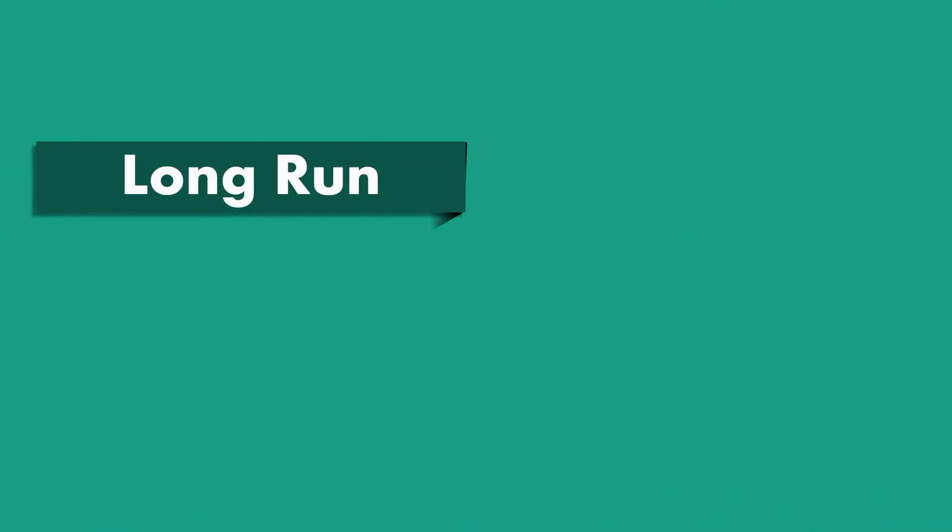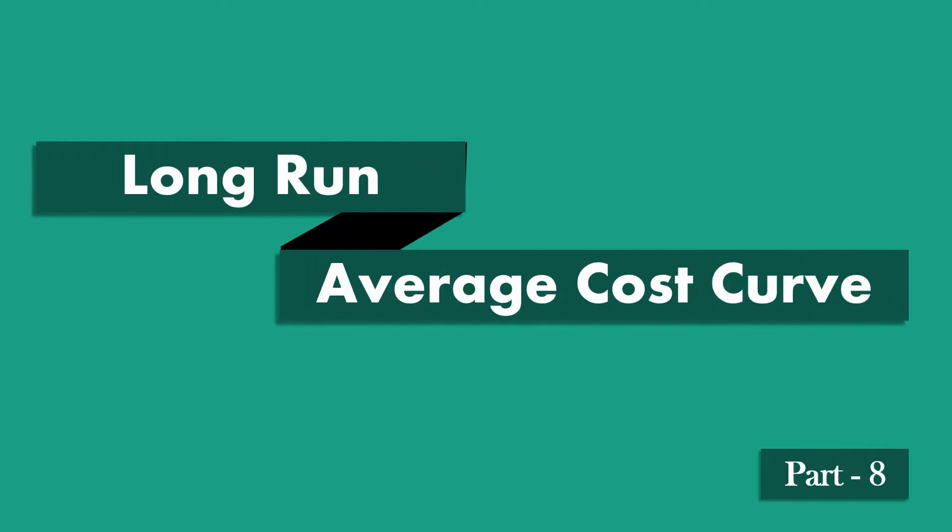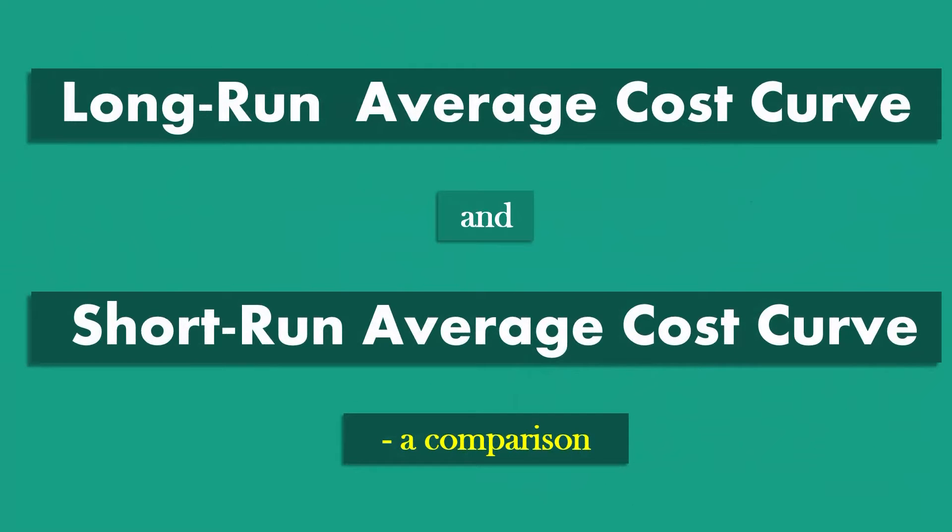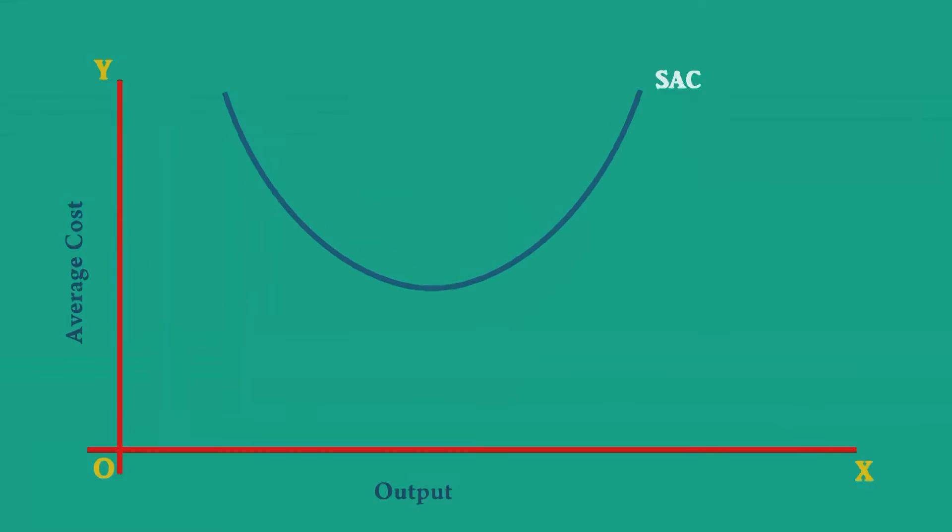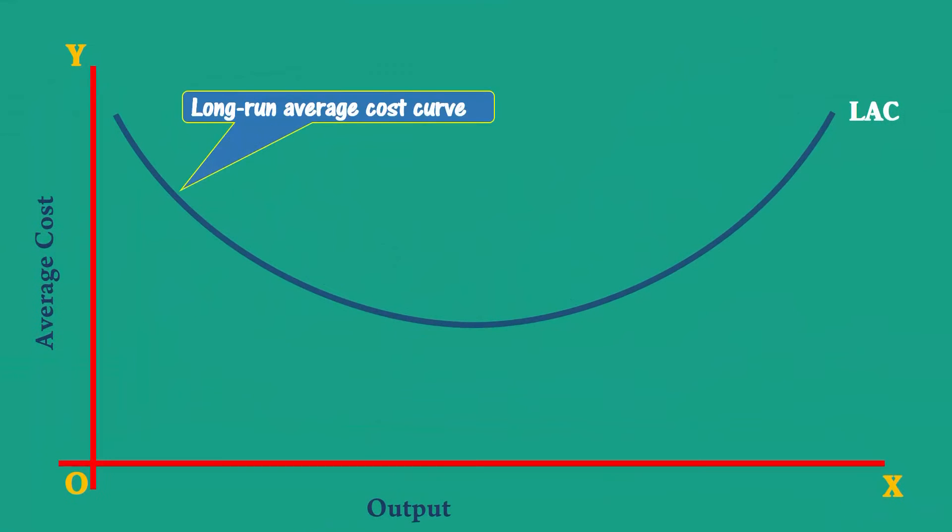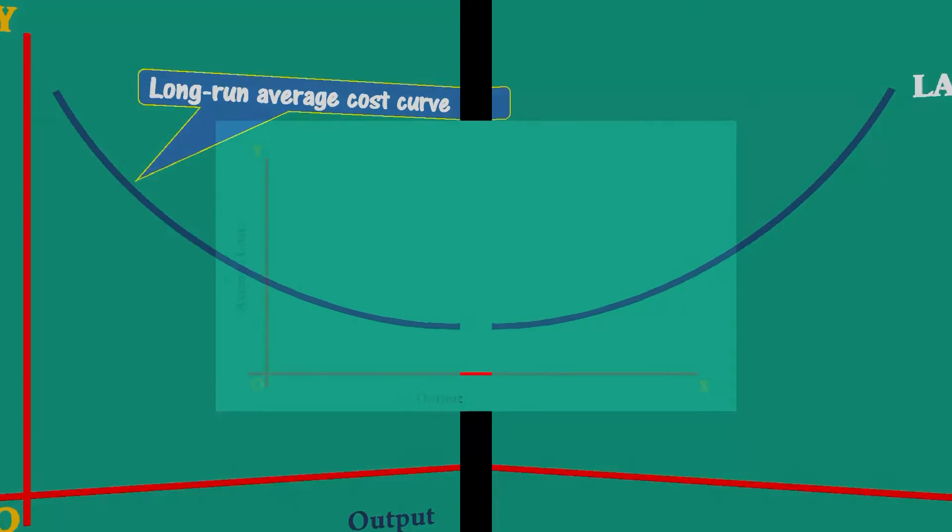In this lesson, we shall try to compare the short run average cost curve with long run average cost curve. Both the curves are U shaped. Similarity ends here. Now the differences.